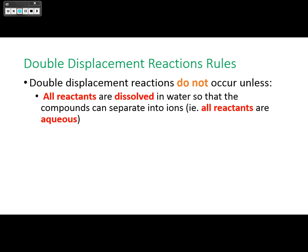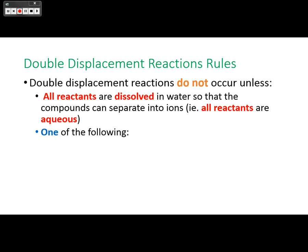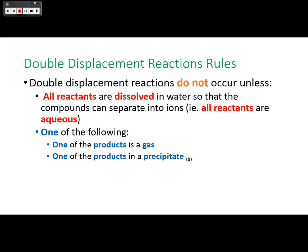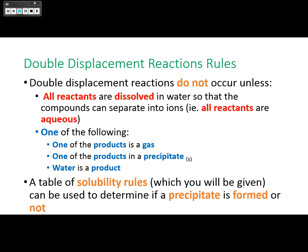One of the following must also occur: either one of the products is a gas, one is a precipitate (a solid), or one of the products is water. So all reactants must be aqueous, and one of the products needs to be non-aqueous. A solubility rules table, which you'll be given on a test, can determine whether a precipitate will form.